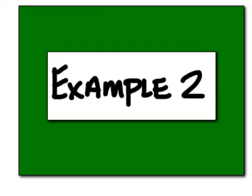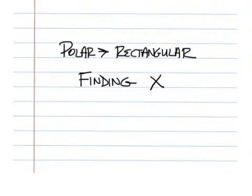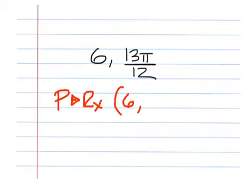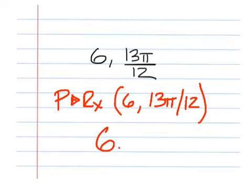Example number 2: polar to rectangular, find X. Our polar coordinate is (6, 13π/12). Go to Second, Apps and choose 7. Enter 6 comma 13π divided by 12, right-hand parenthesis, and you should come back with an answer — rounded to the tenths place — of 6.0.